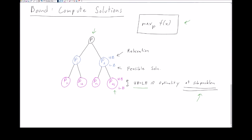Now we can get a more global view of what the branch and bound algorithm is about. We start with a very hard problem in feasible region P, with the objective of finding the optimal solution. To do that, we break this problem into smaller subproblems by splitting the feasible region into smaller feasible regions. Eventually we reach a feasible region small enough that we can find an optimal solution — by computing an upper bound and a lower bound and identifying when they meet. We compute bounds every time we do a problem split: if they meet we have optimality, if not we split further.